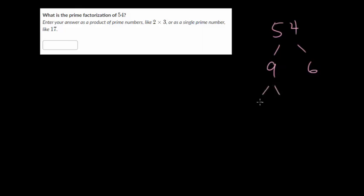9 can be broken up into a product of 3 and 3. Those are both prime numbers so we can highlight the fact that the branches are ended. And 6 is a product of 3 and 2, which again those are both prime numbers, so those branches have ended. Let's just highlight it. I'm going to draw circles here to make it obvious.